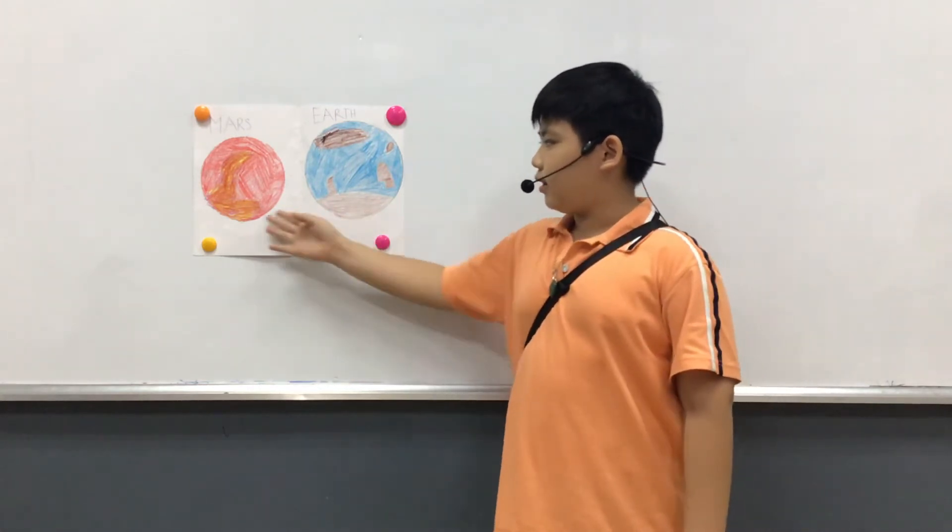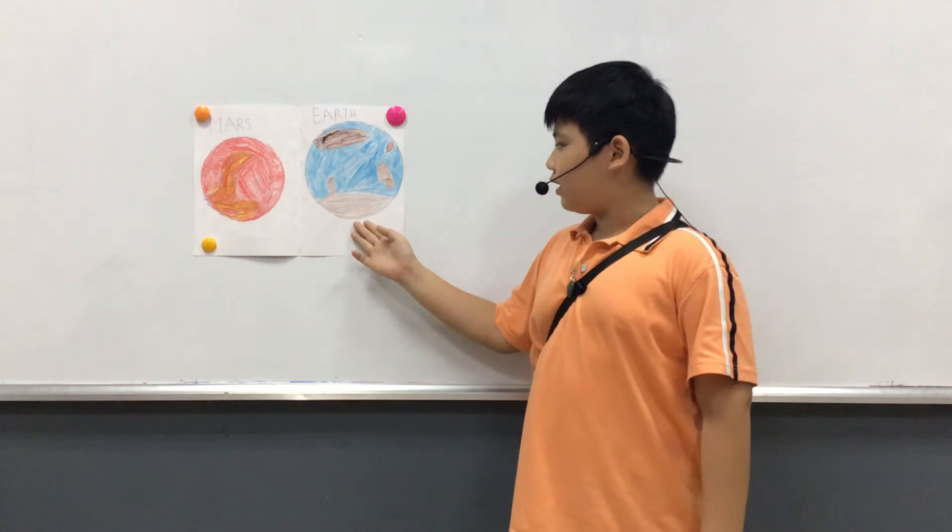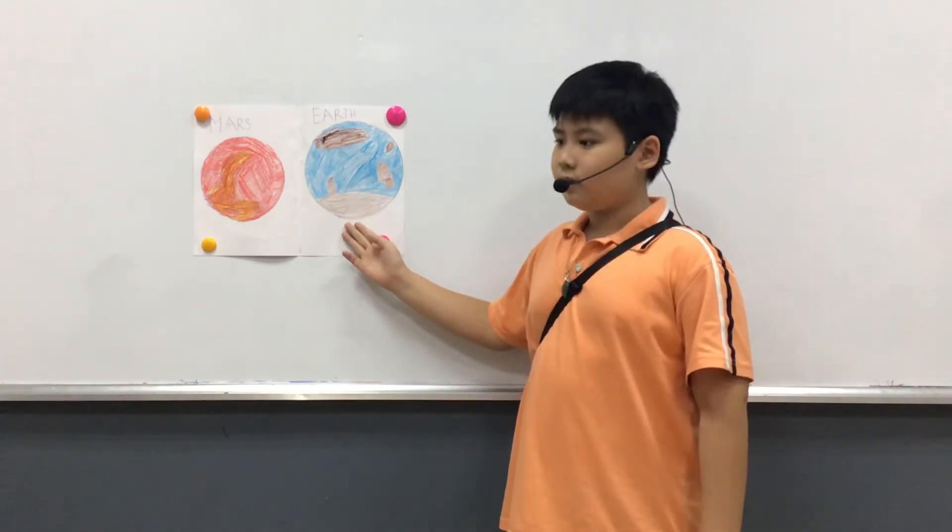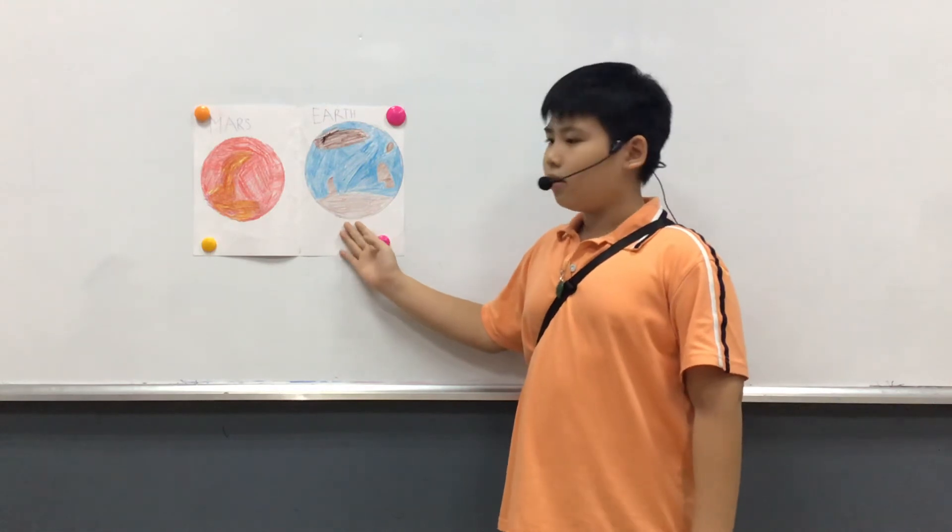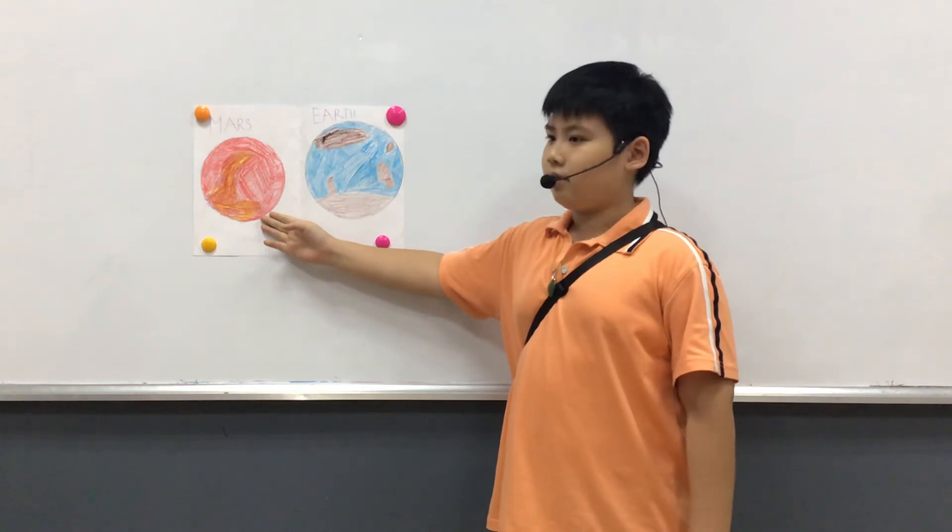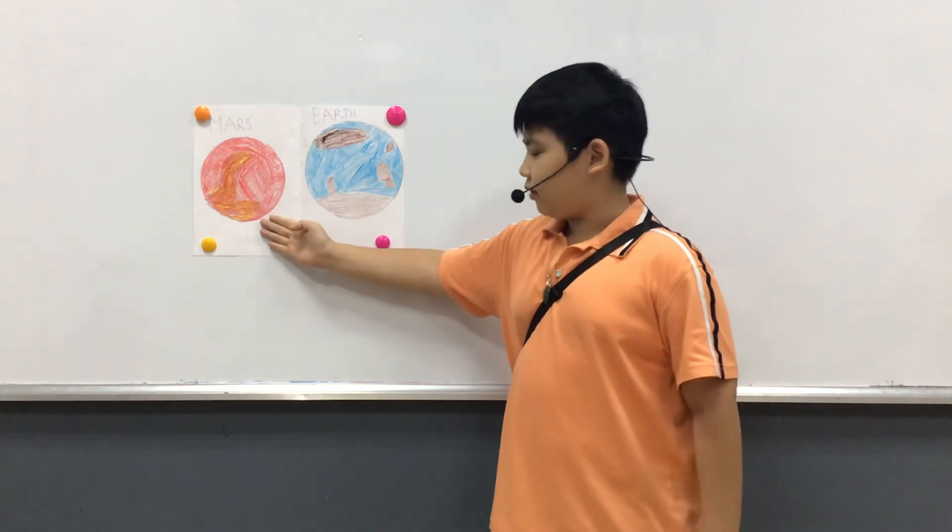Earth is bigger than Mars, so Mars is smaller than Earth. Earth has light and material like trees, water, and rocks, but Mars doesn't have these.